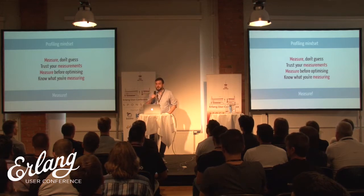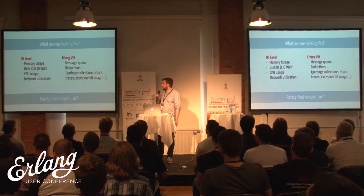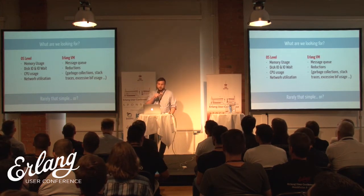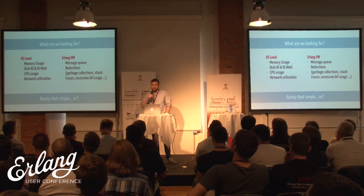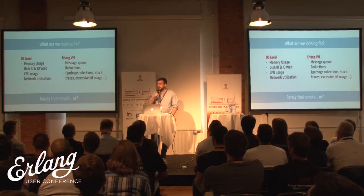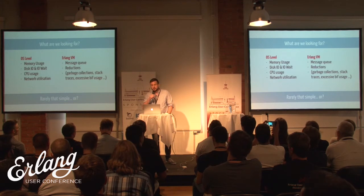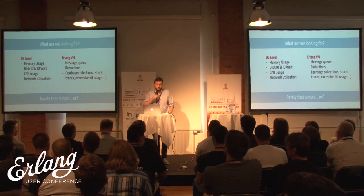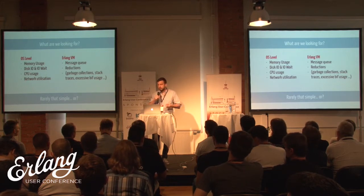The message I'm trying to convey is that it's important to measure things. On a system level, you want to keep track of memory usage, disk performance, CPU usage, and whether your network is performing okay. On the Erlang side, the most common things to look for are message queue buildup and reductions. Reductions are values the Erlang scheduler uses to determine how much runtime an Erlang process gets — you can consider it a measure of how much CPU time a particular Erlang process uses.